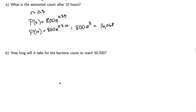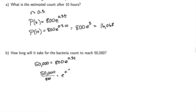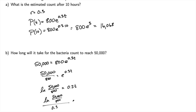For part b: how long will it take for the bacteria count to reach 50,000? We go back to this model and set the output to 50,000: 50,000 = 800·e^(0.3t). Dividing both sides by 800, we get e^(0.3t), then we can get rid of that base by using the natural log. So the natural log of 50,000/800 equals 0.3t, and then we divide both sides by 0.3.